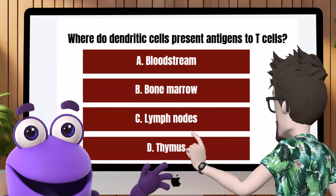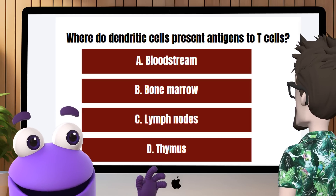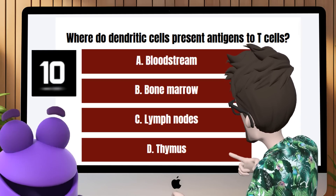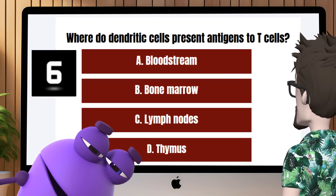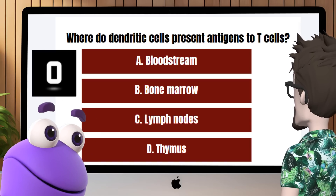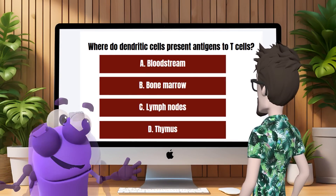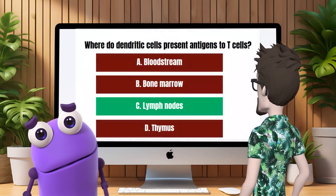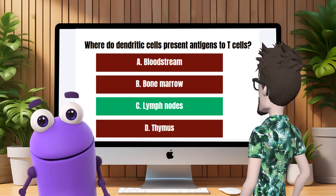Question 3: Where do dendritic cells present antigens to T cells? A, bloodstream? Not quite, Cella. The correct answer is C, lymph nodes. Dendritic cells travel to the lymph nodes to present antigens to T cells, initiating an adaptive immune response.